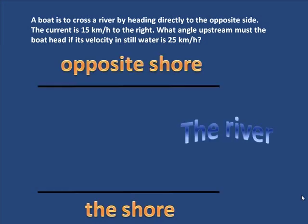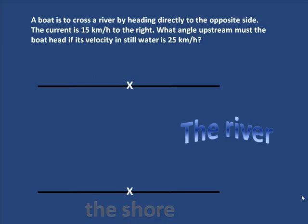So there's the shore, the river, the opposite shore, and you want to head directly across. So you must make motion as shown by the red arrow. That's what your velocity has to end up being.